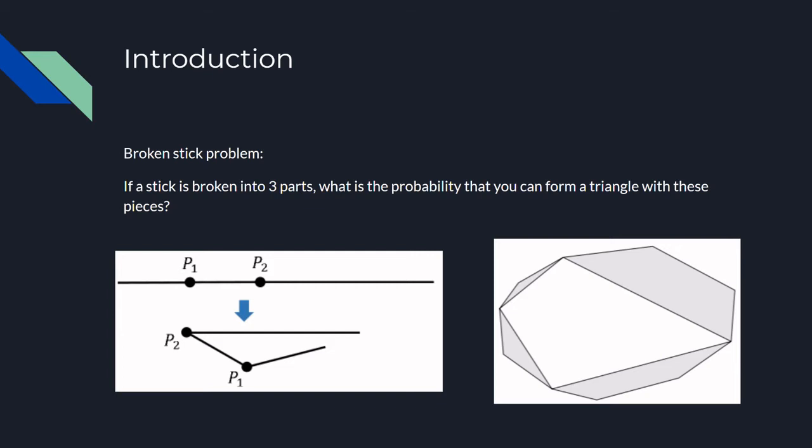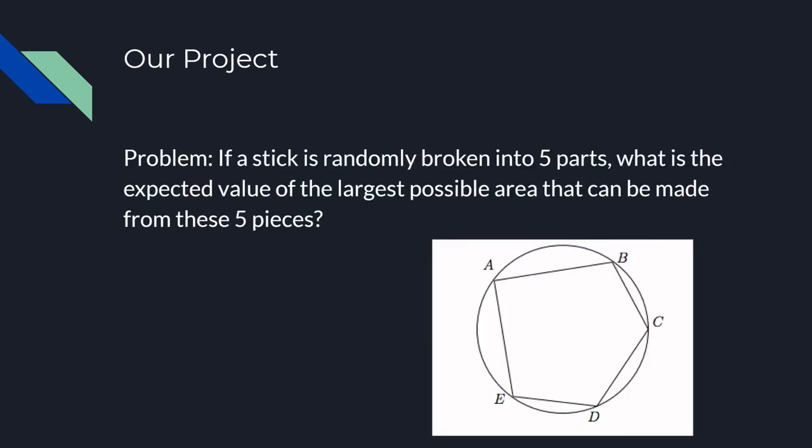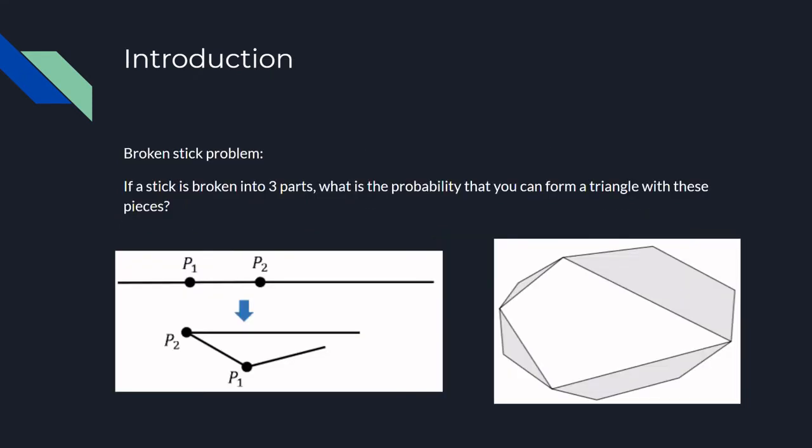It's easily shown that the largest area in any case is when the polygon is cyclic. Let's say there exists a polygon of maximal area that is not cyclic for the sake of contradiction. As shown in the bottom right figure, you can then choose four of its vertices that form a quadrilateral that is not cyclic.